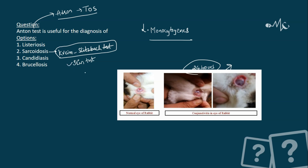Similar to the Mantoux test, it is a skin test. We take a sample of spleen from a known sarcoidosis patient and inject that sample into the skin of a patient who is suspected to have the disease.